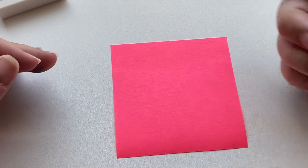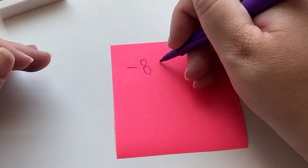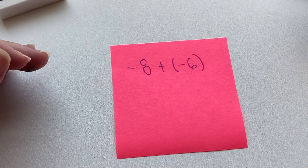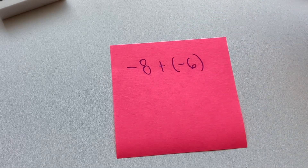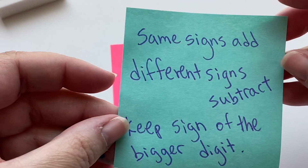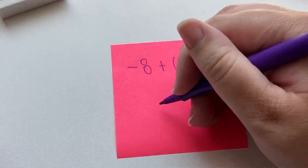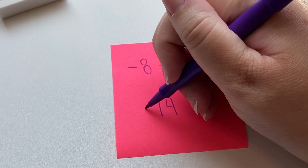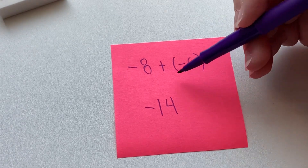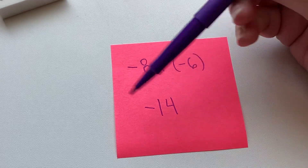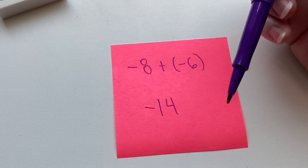Let's look at one more like that. Negative 8 plus negative 6. Same signs — add. If we look at our trusty little reminder here, same signs add. I'm going to add them; they equal 14. Keep the sign of the bigger digit, which is 8, so I keep the sign. If this was a number line, I went 8 to the left and then 6 more to the left, which would be negative 14. It makes sense that you add them and that the answer is negative 14.